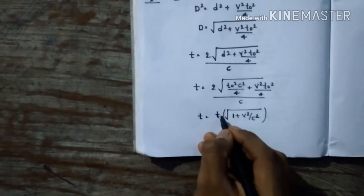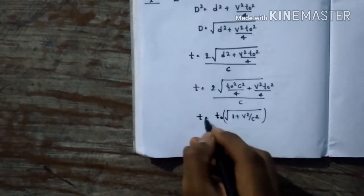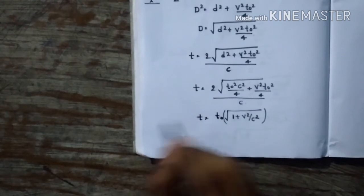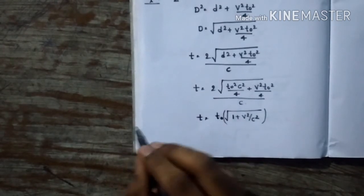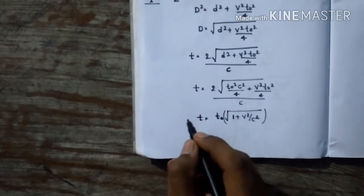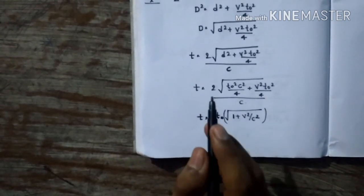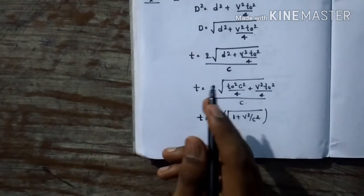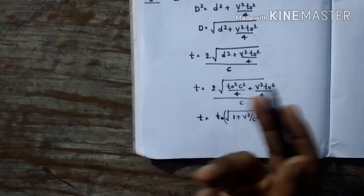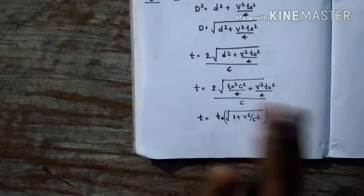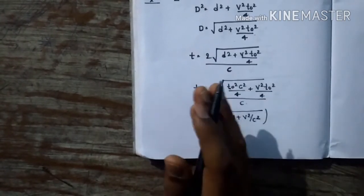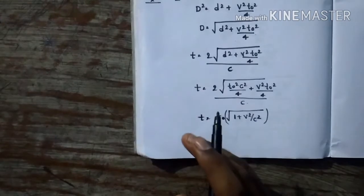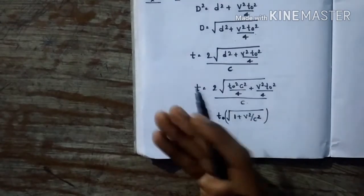This is time dilation — time inside a spaceship or object moving with velocity v is dilated, meaning one second there is greater than one second in the stationary frame like Earth.